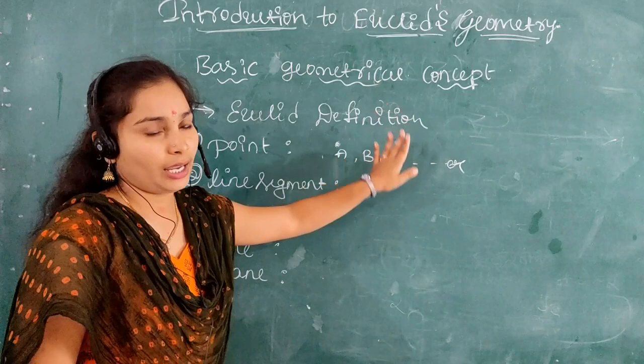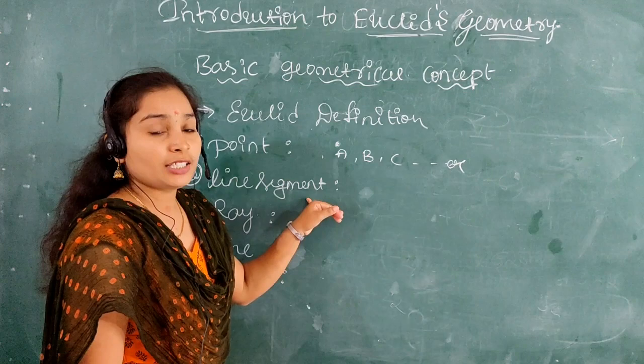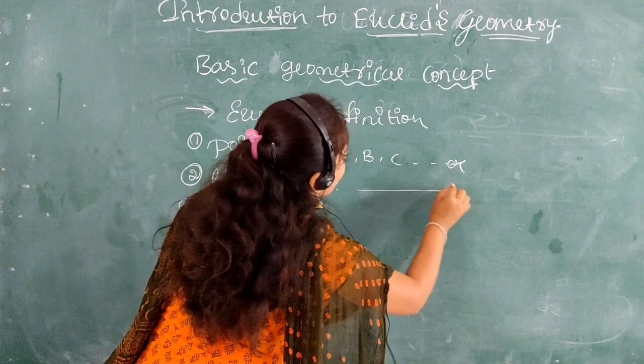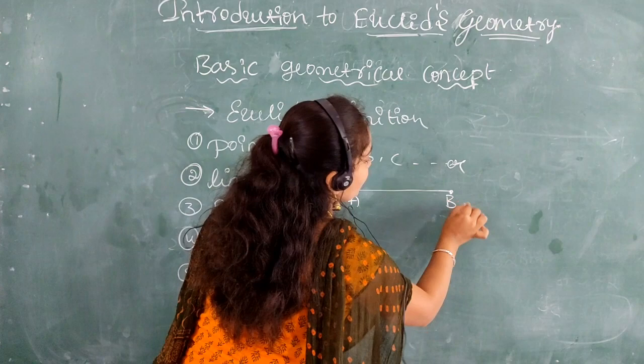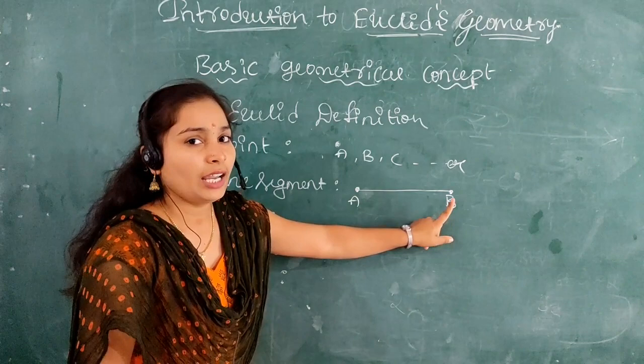The next definition is line segment. A line segment contains both a starting point and an ending point. For example, here A is the starting point and B is the ending point. So a line segment is the path between these two points A and B.